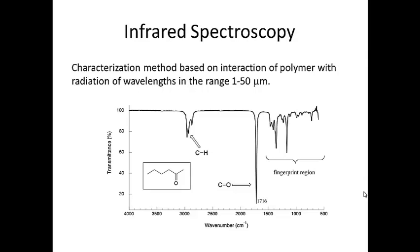We can also use light to our advantage or the transmission of light to our advantage to characterize polymers. In a technique called Fourier Transform Infrared Spectroscopy or FTIR spectroscopy, we pass light through a thin sheet of polymer in order to determine what kind of polymer it is.